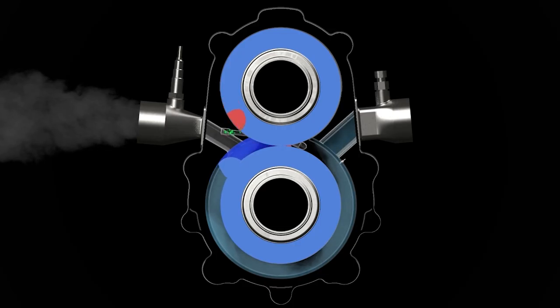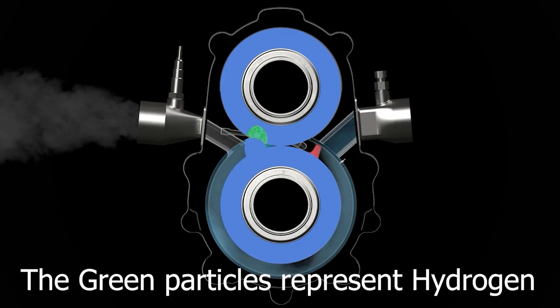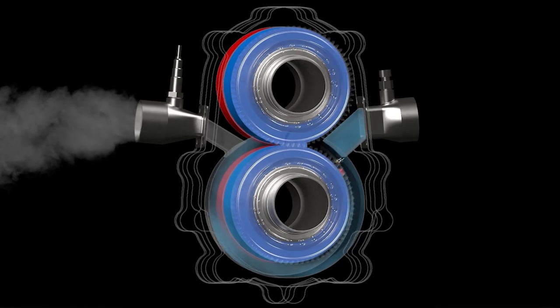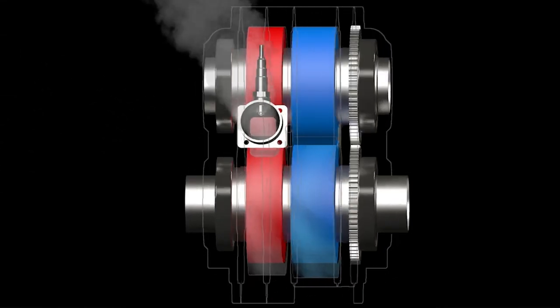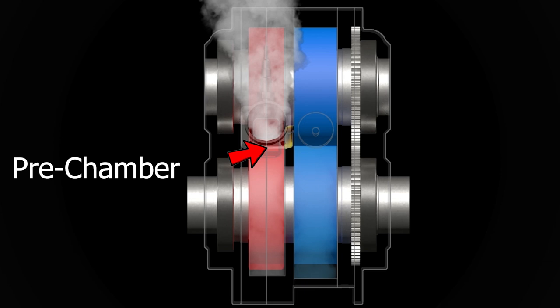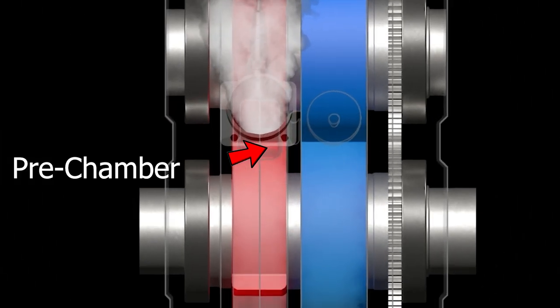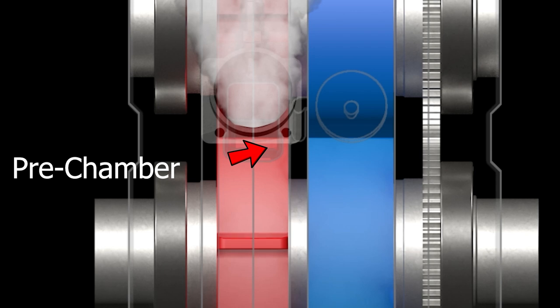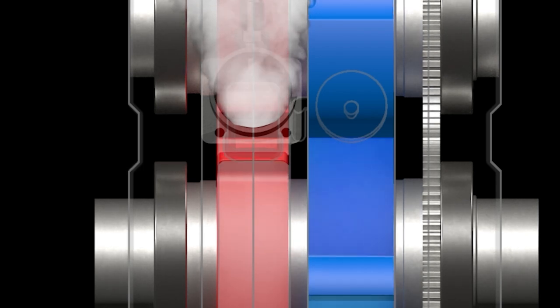Now as the air moves into the combustion housing, hydrogen is rapidly mixed into the air. Now I will go a bit more in depth on how the hydrogen makes its way into the engine later, but for now let's start on the topic of how combustion happens. Once the compressed air and hydrogen is thoroughly mixed in the pre-chamber, it will start to make its way to the combustion chamber.